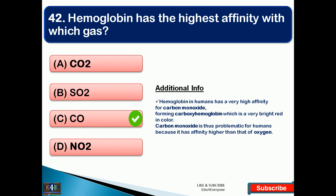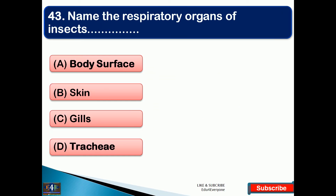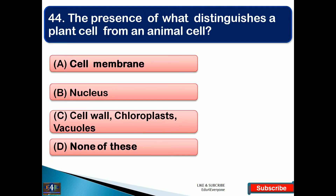Carbon monoxide is problematic for humans because it has a higher affinity than that of oxygen. Name the respiratory organs of insects — the right answer is option D, that is trachea. The presence of what distinguishes a plant cell from an animal cell? The right answer is option C, that is cellulose, chloroplasts, and vacuoles.